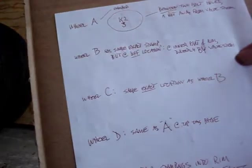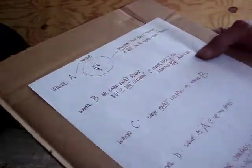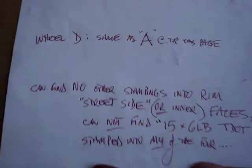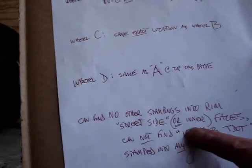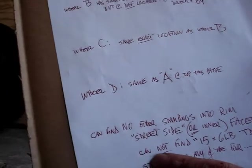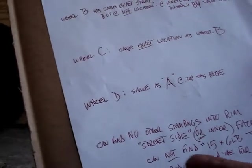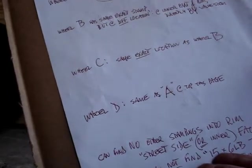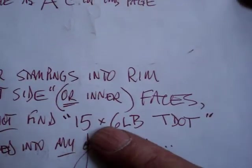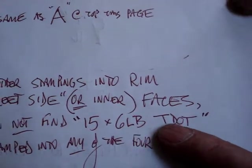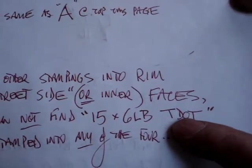And I can't find anything right here, see, can't find no other stampings into the rim on the street side or the interfaces. I can't find my first set. It had some 15 x 6 lb then a space and T dot T dot.